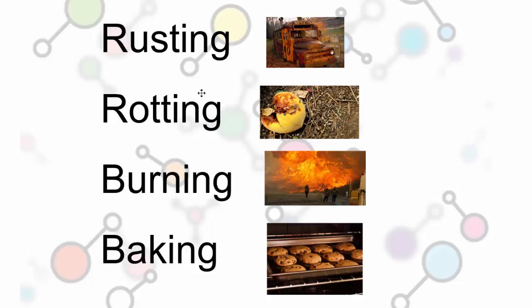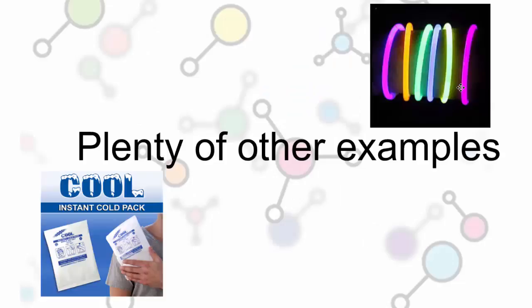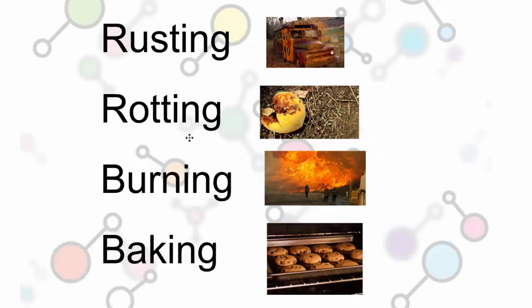They like to put questions about rusting, rotting, burning, baking on the test. But are those the only types of chemical reactions? Certainly not. Glow sticks glowing. Instant cool packs getting cold. There's tons of examples, but they just don't sound as cool and as easy to remember as rusting, rotting, burning, baking.